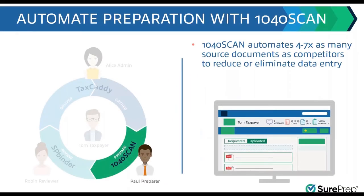In the prepare phase, we use our 1040 Scan tax document automation tool — also called the scan and populate tool — to automatically organize source documents and extract their data into the tax software. 1040 Scan is differentiated in many ways, including automating far more documents than any other system. For instance, we automate over 500 brokerage statements versus about 100 for other systems, covering formats like Maryland G Trade and 500 different brokerage statements.